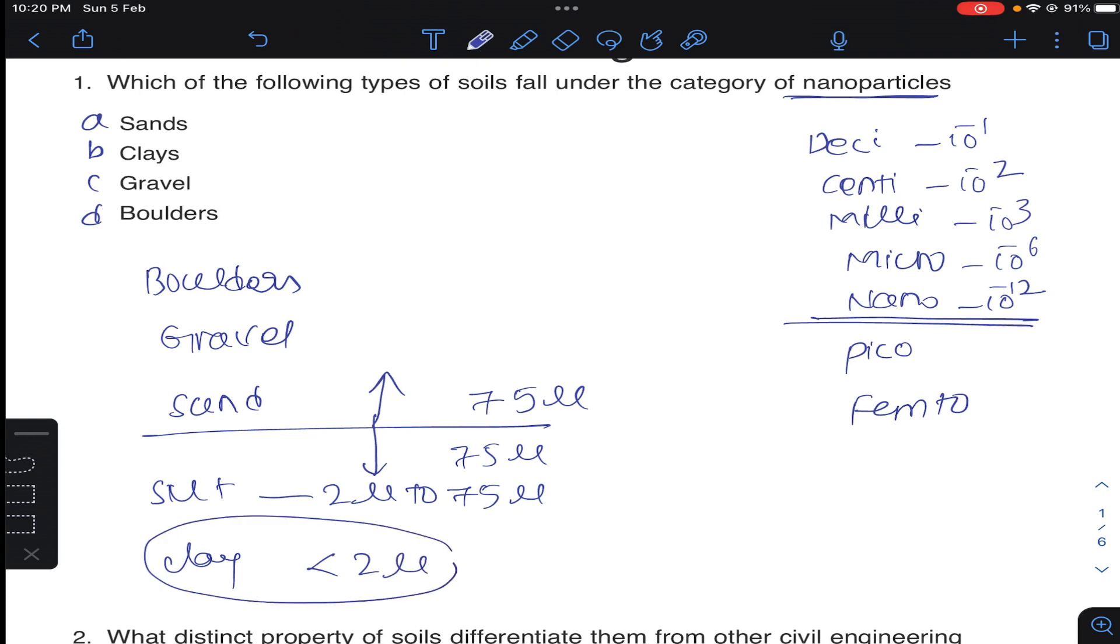Below 75 micron it is silt and clay. So silt size is 2 micron to 75 micron, and less than 2 micron is the least size. So it will come under nanoparticles. Answer B for question number one.